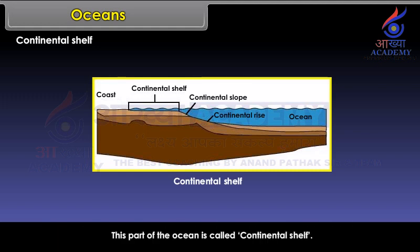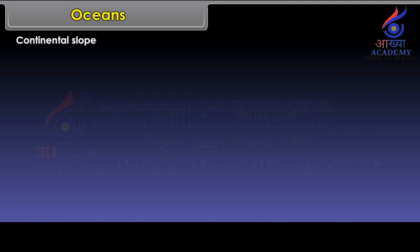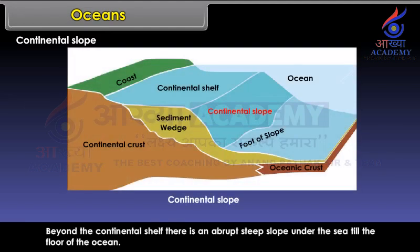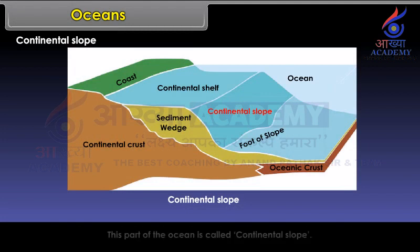Continental Slope. Beyond the continental shelf there is an abrupt steep slope under the sea till the floor of the ocean. This part of the ocean is called the Continental Slope.